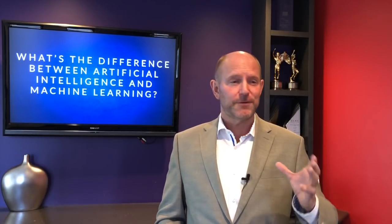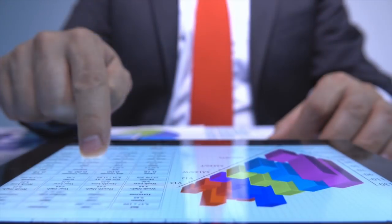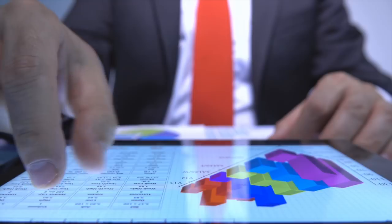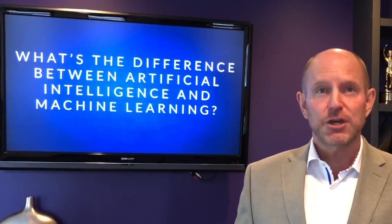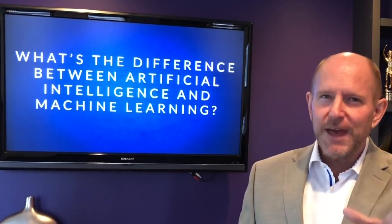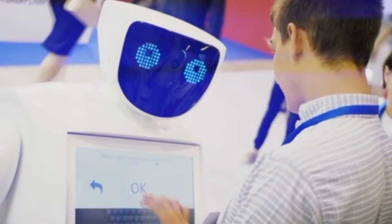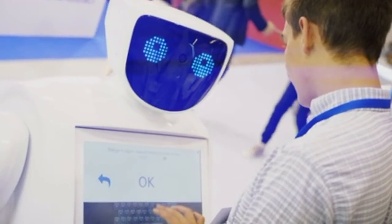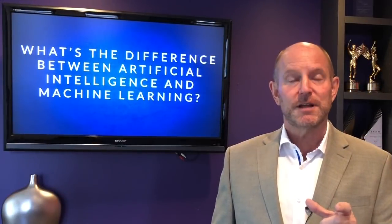What is the difference between artificial intelligence and machine learning? It's actually not that complex. Artificial intelligence is anytime a computer or a robot does something that behaves like a human being — whether it's sorting through images on Google, that's artificial intelligence, or whether it's a robot doing something in a shopping mall, that's also artificial intelligence.